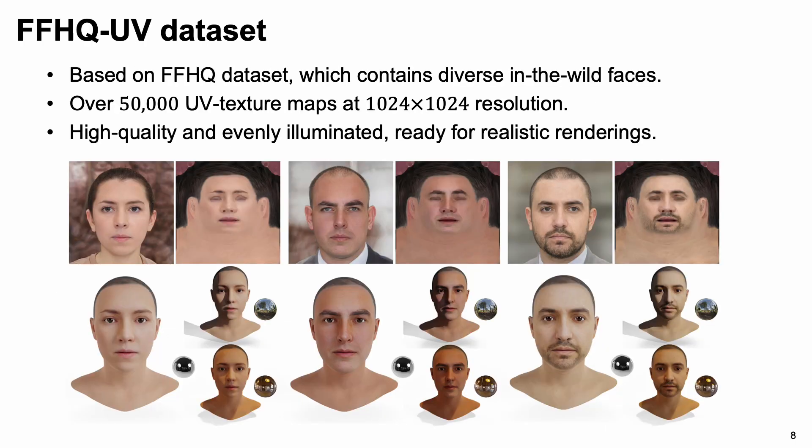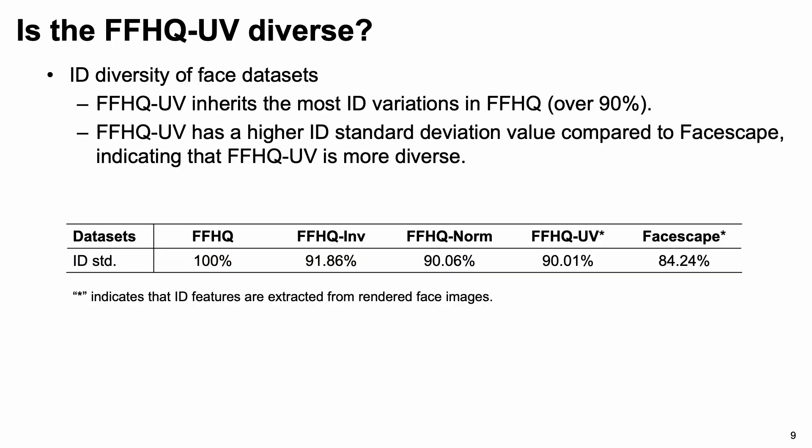We apply the proposed dataset creation pipeline to the images in the FFHQ dataset and produce our FFHQUV dataset. The FFHQUV dataset consists of over 50,000 high-quality UV texture maps, which are evenly illuminated and ready for realistic renderings. To evaluate the diversity of the FFHQUV dataset, we compute the standard deviation of ID vectors presented in the dataset. This table shows that FFHQUV inherits over 90% of the ID variations in FFHQ, and has a higher ID standard deviation value compared to the FHESCAPE dataset, indicating that FFHQUV is more diverse.